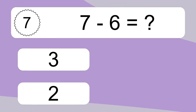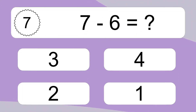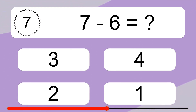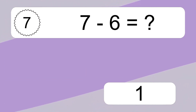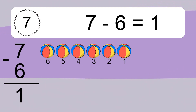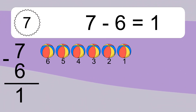7 minus 6 equals what? 7 minus 6 equals 1. Let's count it. 6, 5, 4, 3, 2, 1.